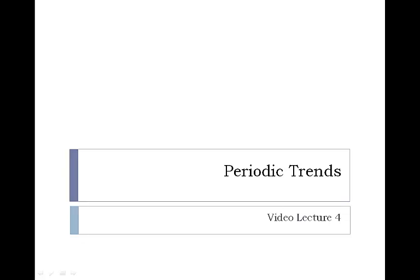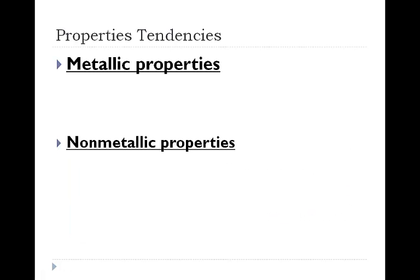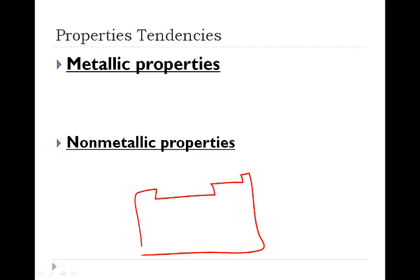Video lecture 4: Periodic Trends. When we move across the periodic table, the periodic table has our metals on the left side and our non-metals on the right, separated by the metalloids, which are on the staircase.